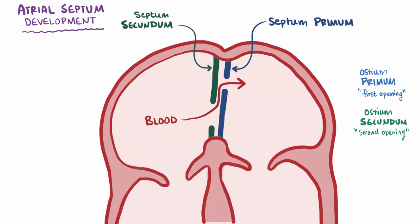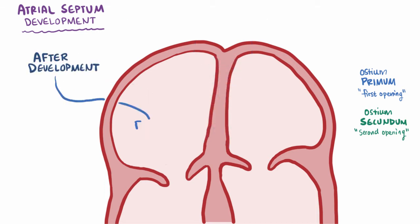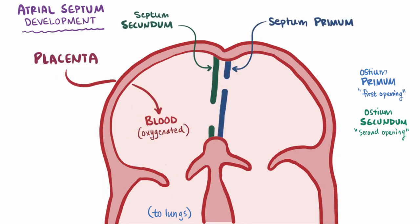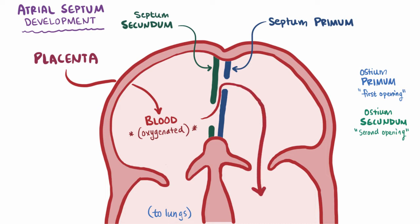The developing newborn gets oxygenated blood from the placenta, which goes from the umbilical vein over to the right atrium. This is different because after development only deoxygenated blood goes to the right atrium, which is then sent to the lungs to pick up oxygen. In the developing fetus, though, it's already oxygenated, so instead of going to the right ventricle and to the lungs and back to the left atrium, it just bypasses the right ventricle and lungs through the foramen ovale and into the left atrium. The oxygenated blood then goes to the left ventricle to be pumped to the body.